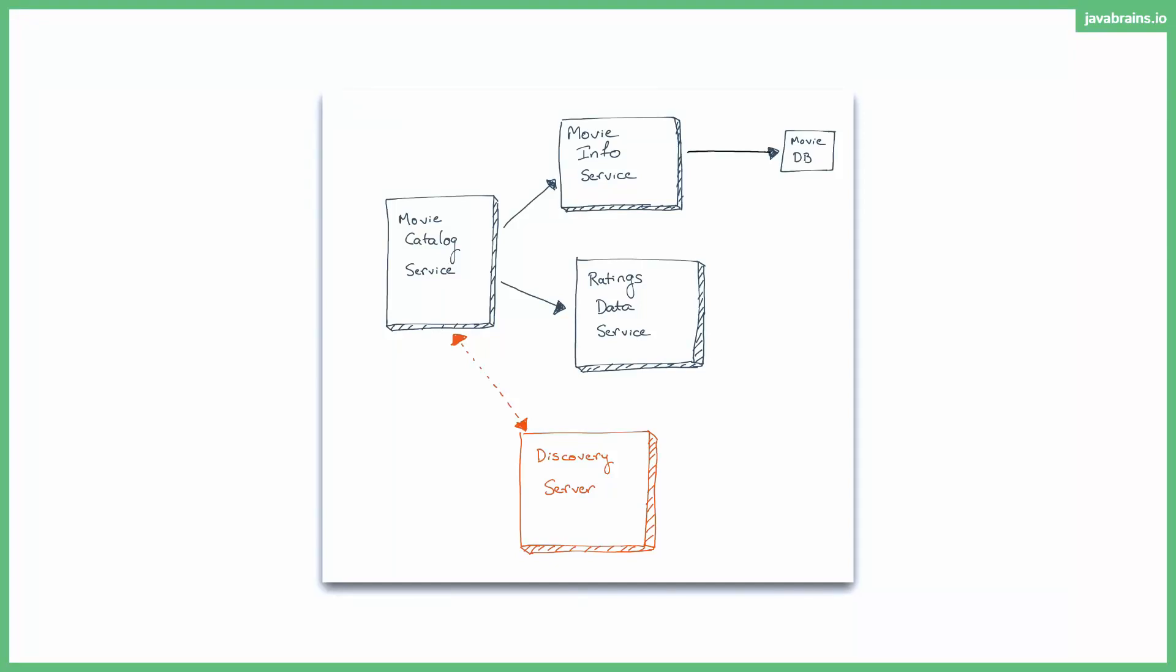So in this case, you have the movie catalog service having the fallback. It's calling these two. If this one fails, or if this one fails, this one's going to say okay, I'm calling the fallback and then it's returning that back. I'm hoping this makes sense.